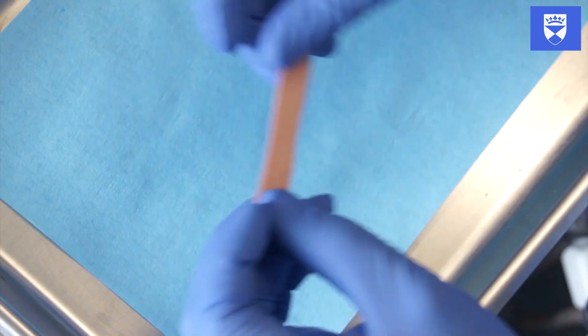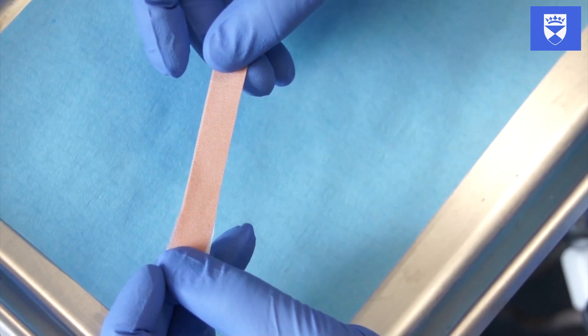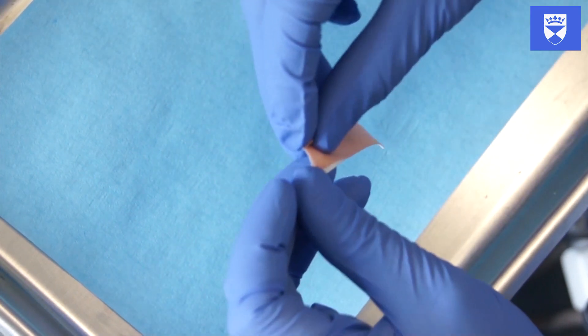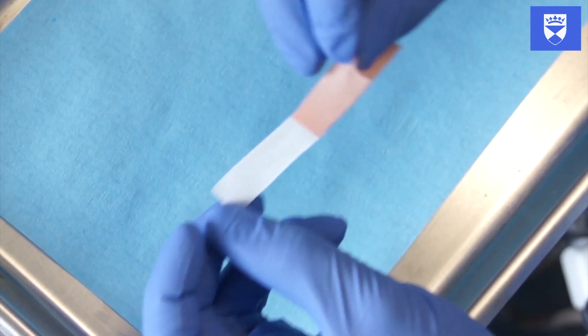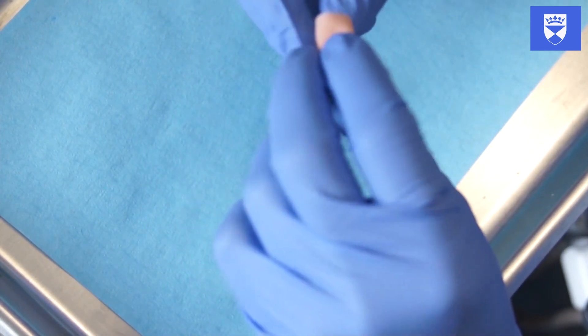Two common methods are to place a sheet of gauze in the oral cavity, or alternatively to affix the crown to your finger with a piece of adhesive tape. This is the method demonstrated in the video. If you are using adhesive tape, it is important to ensure that the patient does not have an allergy to elastoplast.